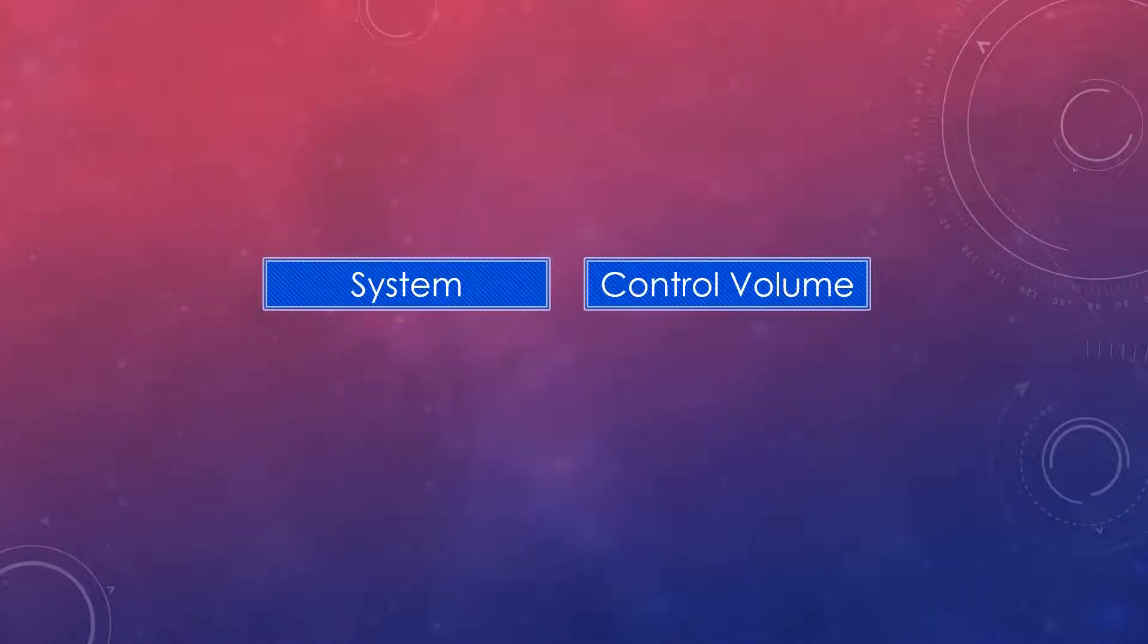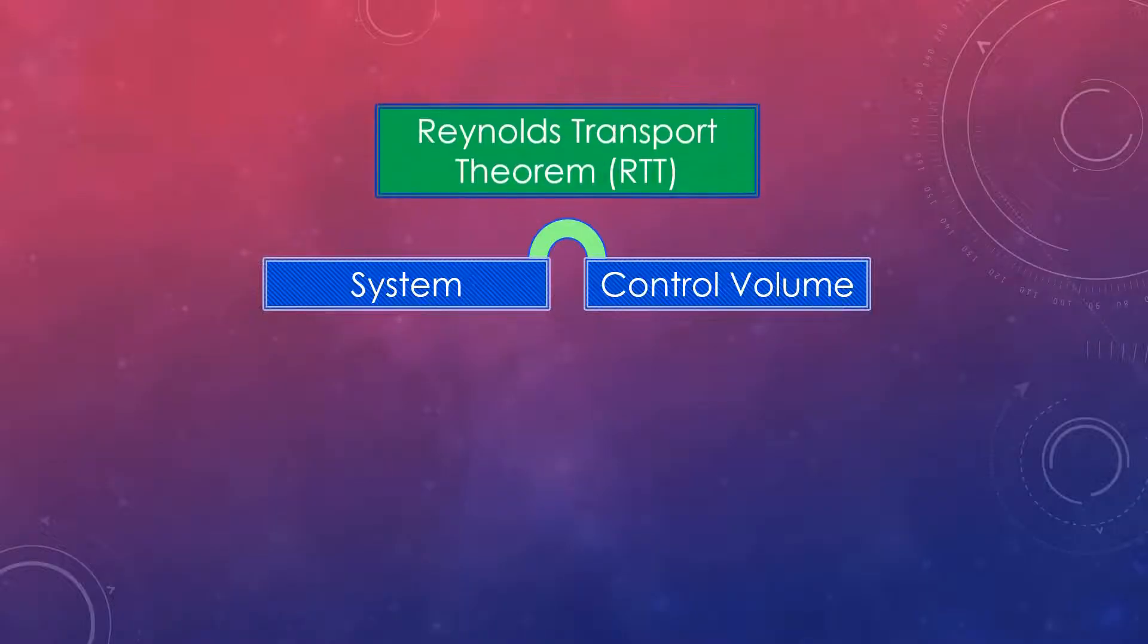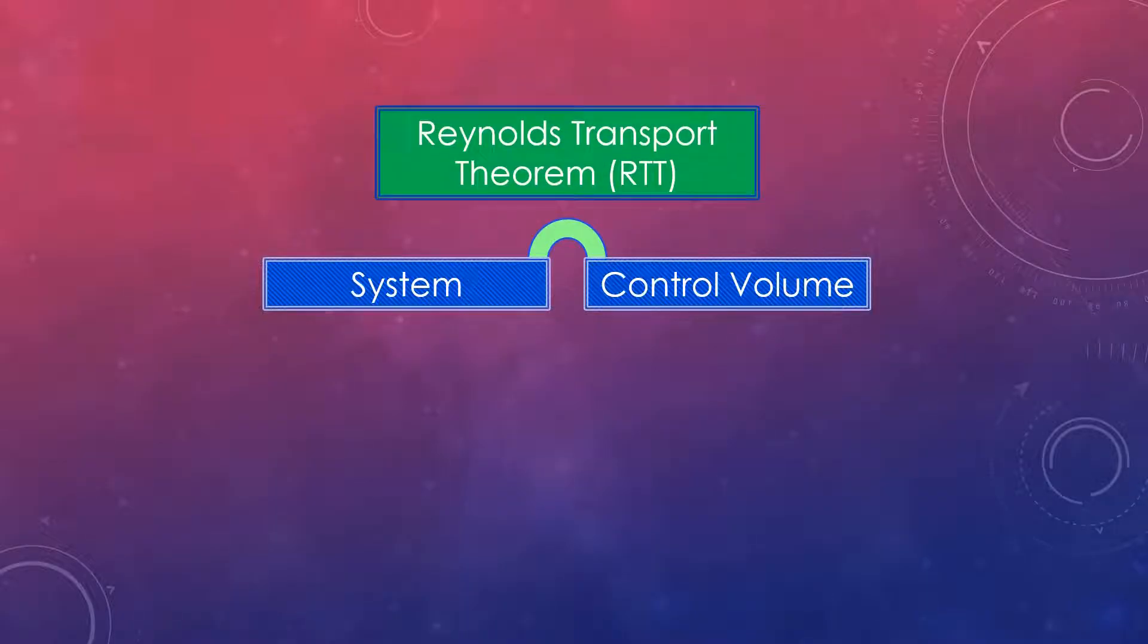The relationship between the time rate of change of an extensive property for a system and for a control volume is expressed by Reynolds transport theorem. Let's understand how this theorem is derived.